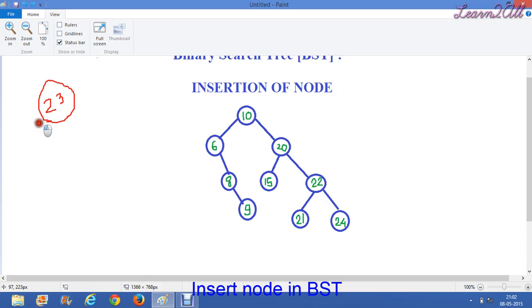First we will compare 23 with root node that is 10. Now if an inserted element is greater than root node we will move toward the right side of the tree. So here 23 which is greater than 10, so we will move toward the right side.